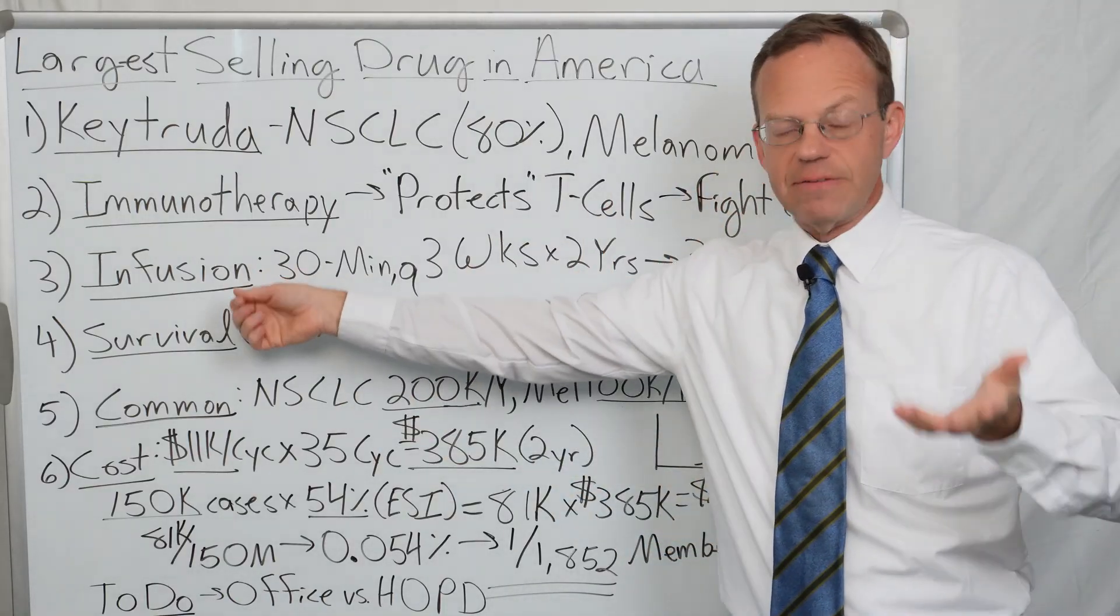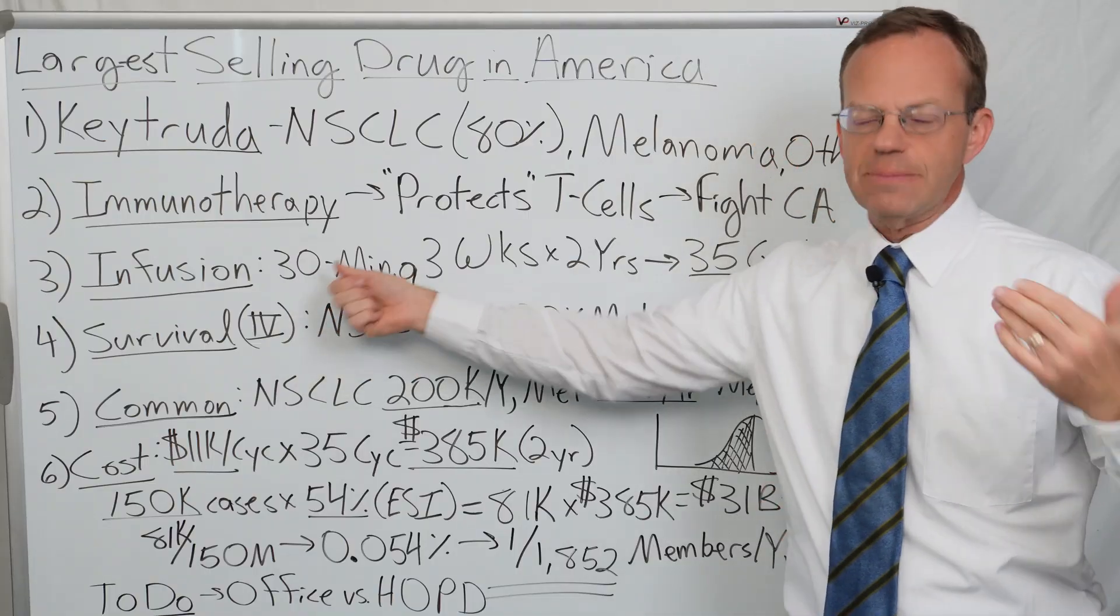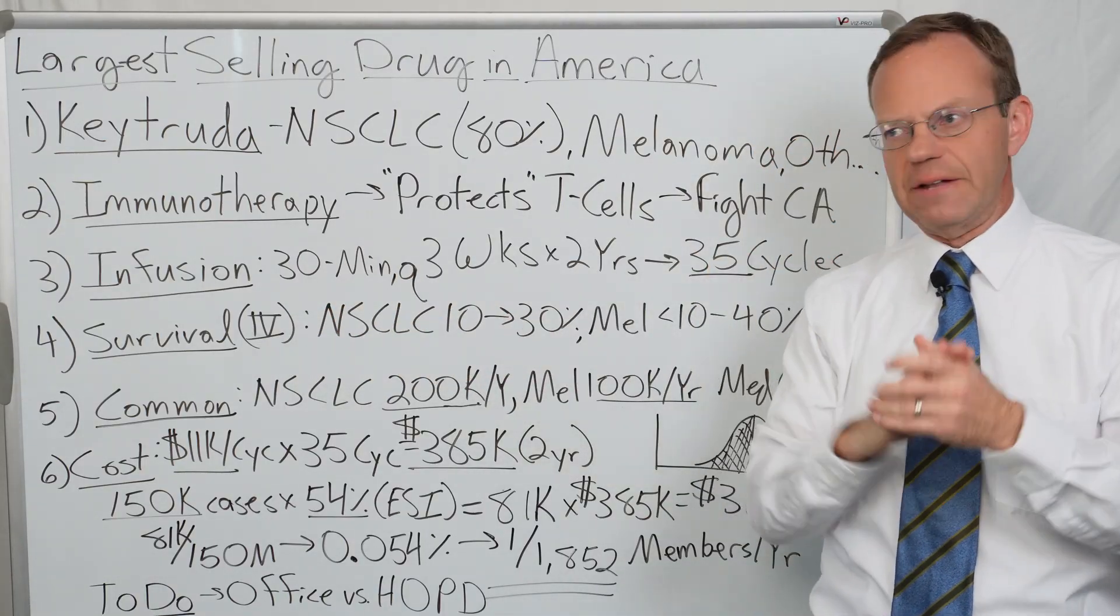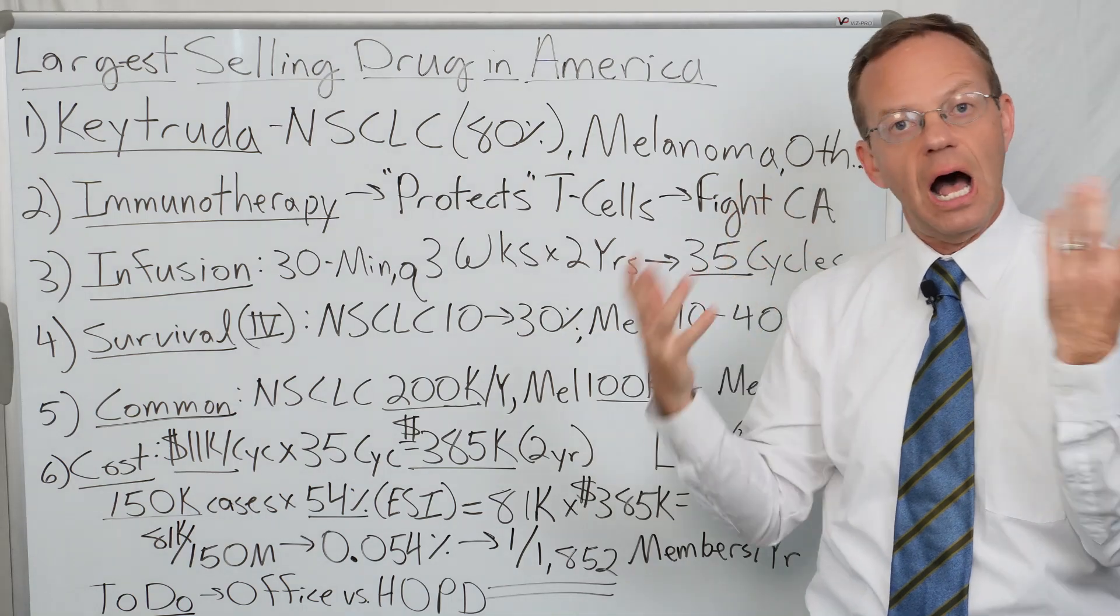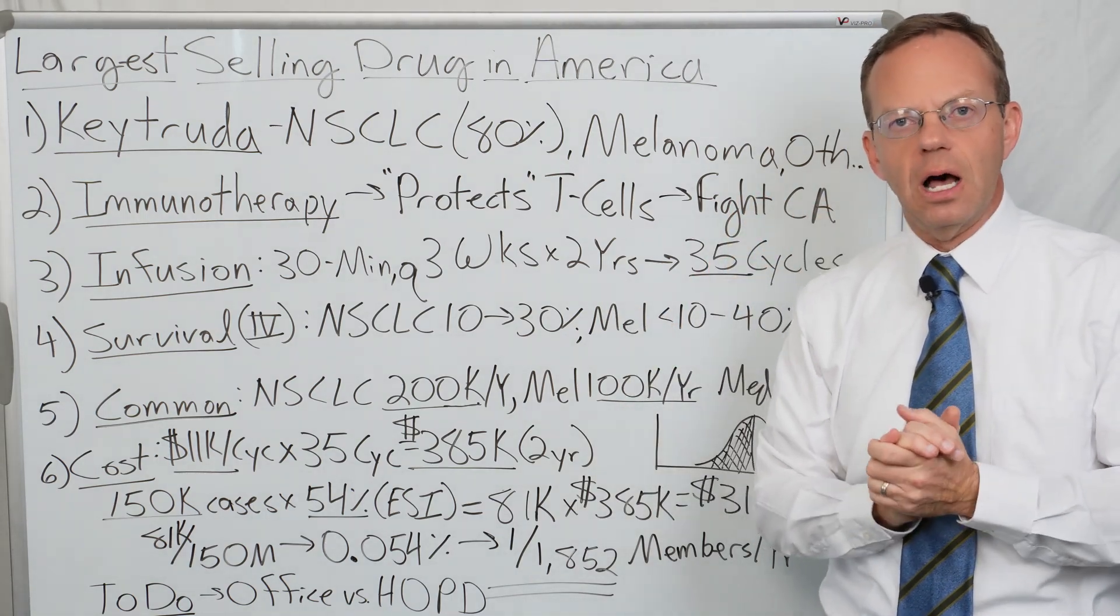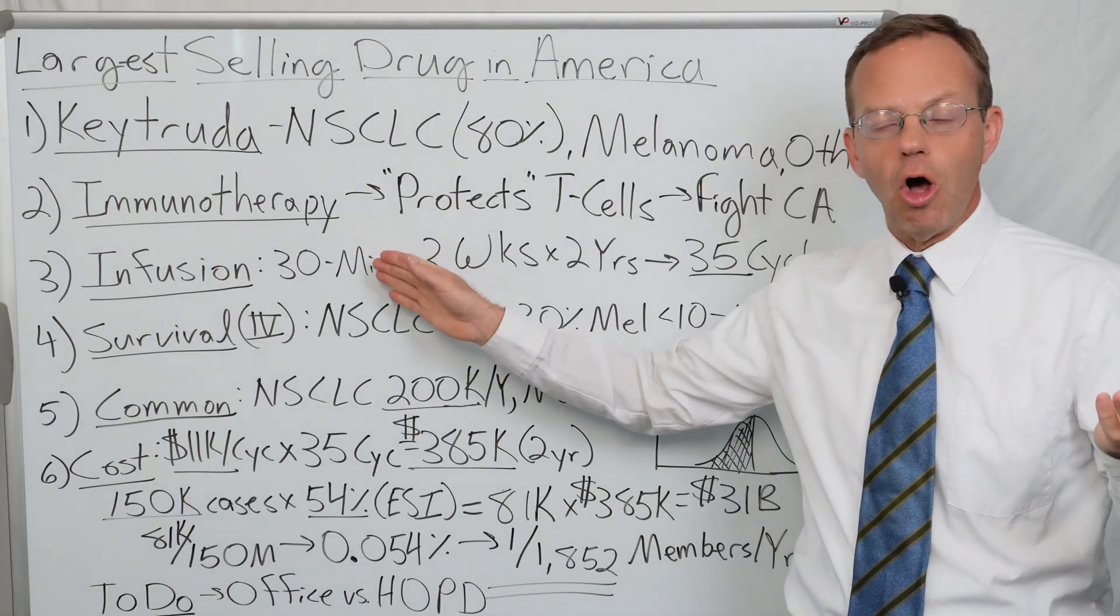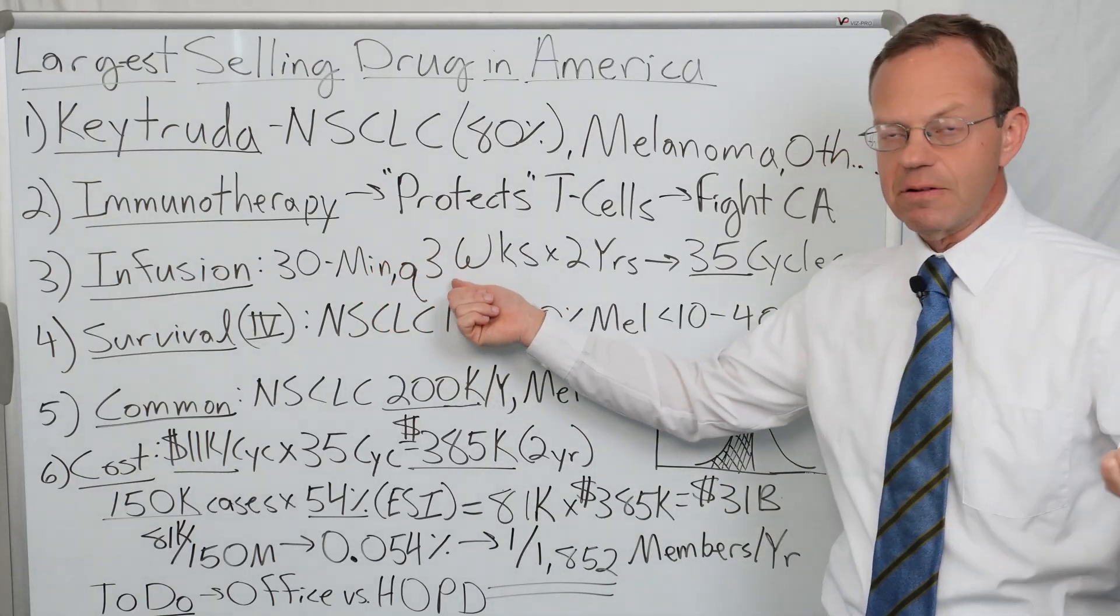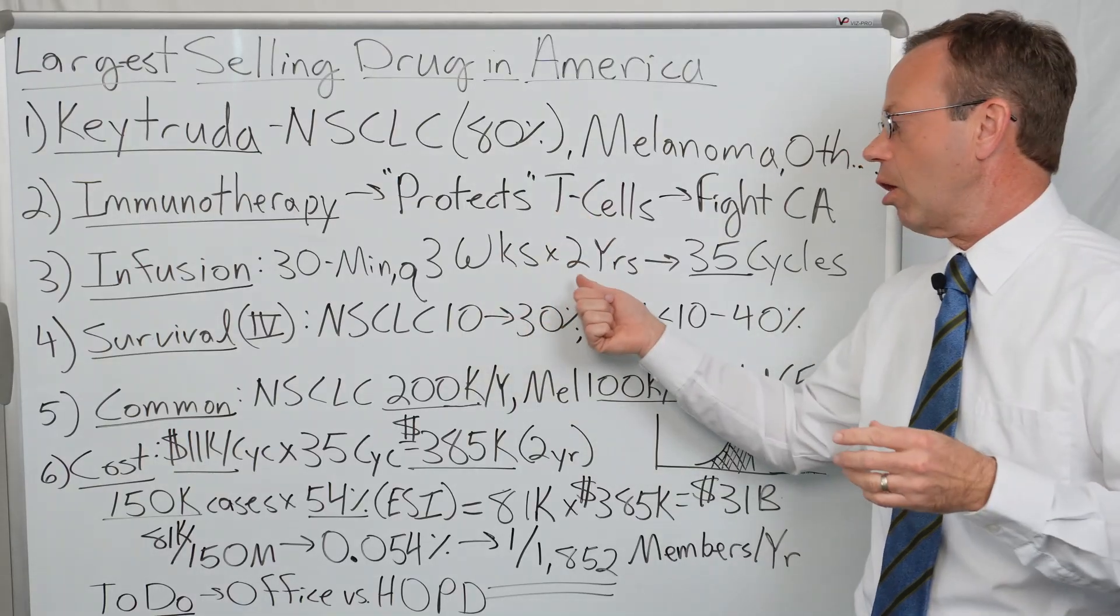How is it given? It's given by an infusion. It takes about 30 minutes to infuse. There's no immediate severe side effects. Sometimes things need to be infused in a hospital because it might change your blood pressure or heart rate, but Keytruda has longer term side effects but is very safe to infuse. It's given about every three weeks and for quite a long period of time, upwards of two years.